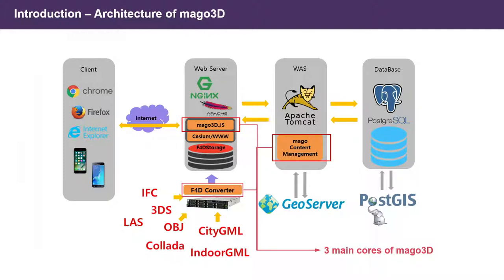We also devised a new format called F4D, similar to 3D Tiles. We can take IFC, LiDAR data, OBJ, Collada, CityGML, and IndoorGML files and convert them to our own format called F4D. The specification of F4D is open to the public.